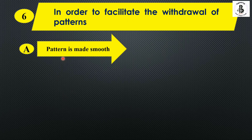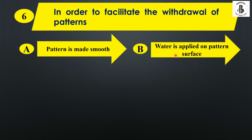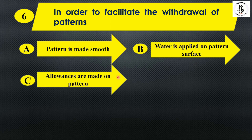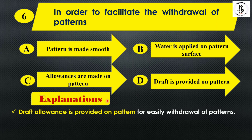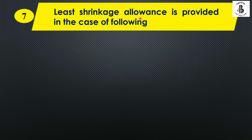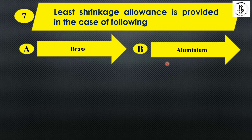The next question: in order to facilitate the withdrawal of patterns — option A: pattern is made smooth; option B: water is applied on pattern surface; option C: allowances are made on pattern; option D: draft is provided on the pattern. Draft allowance is associated with the easy withdrawal of patterns from sand molding, so the right answer is option D.